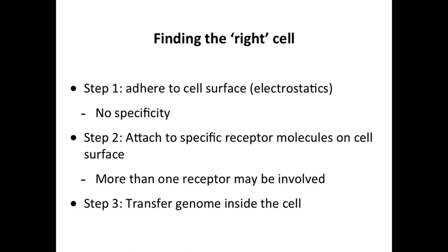To initiate infection, viruses first adhere to the cell surface non-specifically through electrostatic interactions, then check whether that cell has a specific receptor on the surface to which the virus can bind. So there are lots of initial collisions, and at some point one of those ends in the virus interacting with a specific receptor. The next step is to transfer the genome into the cell, which can happen in a number of places depending on the virus. We'll look at unifying principles across all these variations.